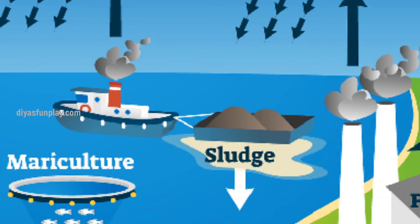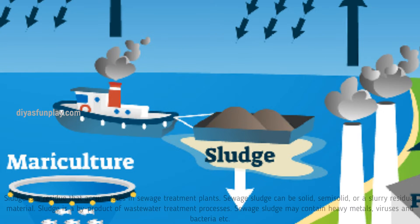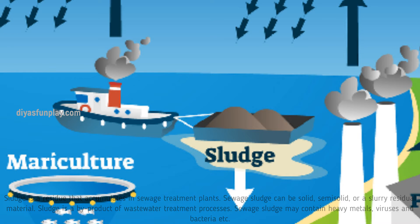Sludge. Sludge is a residue that accumulates in sewage treatment plants. Sewage sludge can be solid, semi-solid, or a slurry residual material. Sludge is a byproduct of wastewater treatment processes. Sewage sludge may contain heavy metals, viruses, and bacteria, etc.